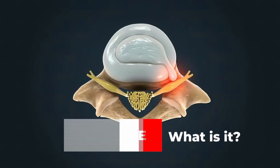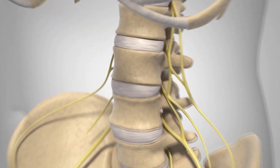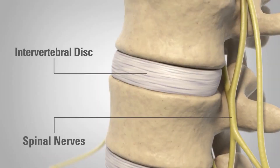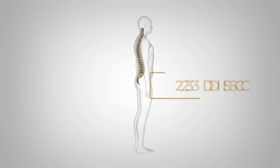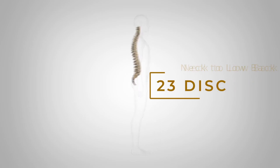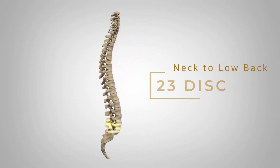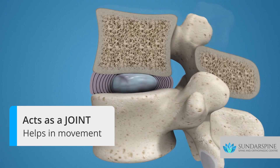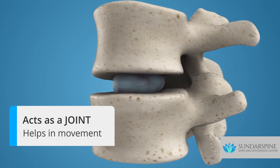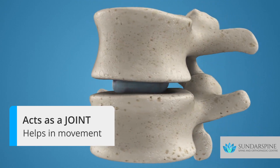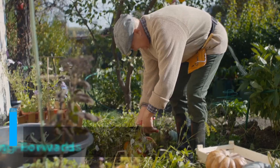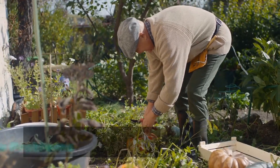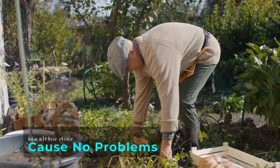What is disc prolapse? The disc is the gel-like substance between your vertebrae. There are 23 discs in the spine, starting from the neck to the low back. The disc acts as a joint and helps in the bending of the spinal column — in other words, it helps you bend forwards. As long as the disc is healthy, there is no problem.